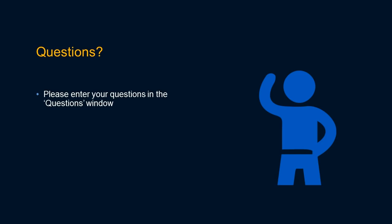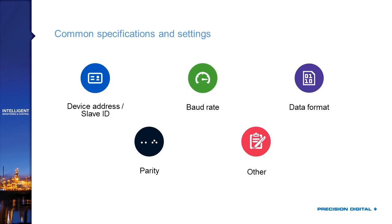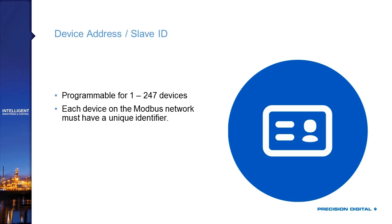To understand what Modbus is really doing, you need to understand some terminology. You have to be familiar with slave address or device ID, baud rate, data formats, and parity. There are other specifications as well, though most aren't necessary for a basic setup. Every Modbus device must have a device address — sometimes called a slave ID — which is a unique identifier on the Modbus network, a number between 1 and 247.